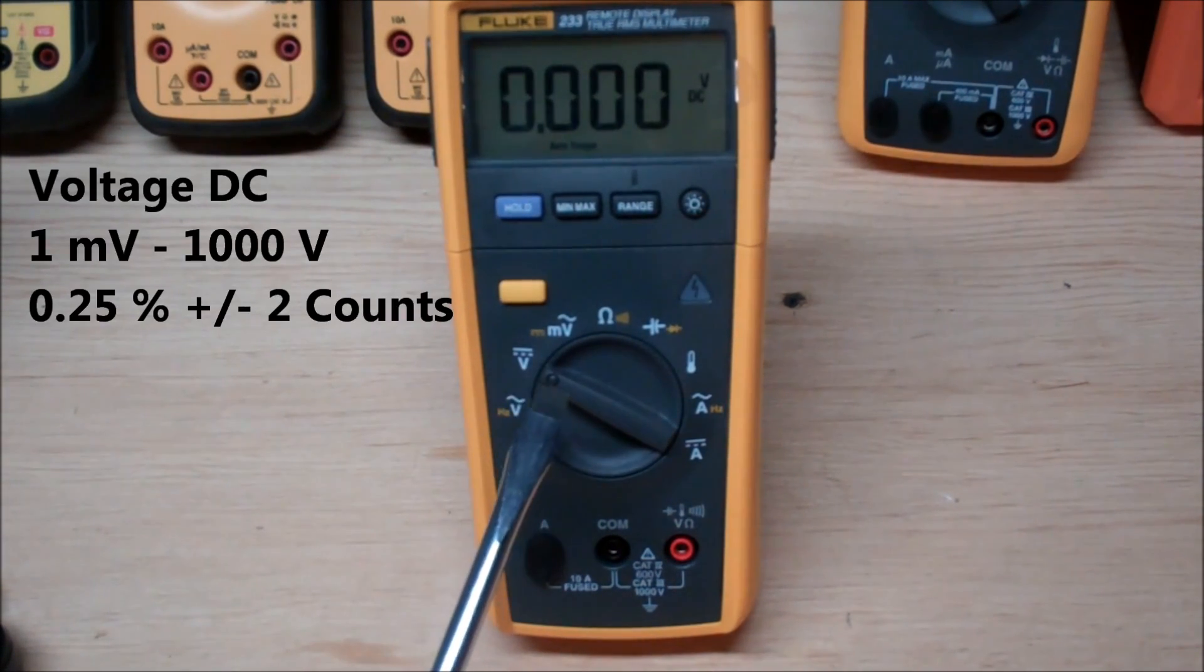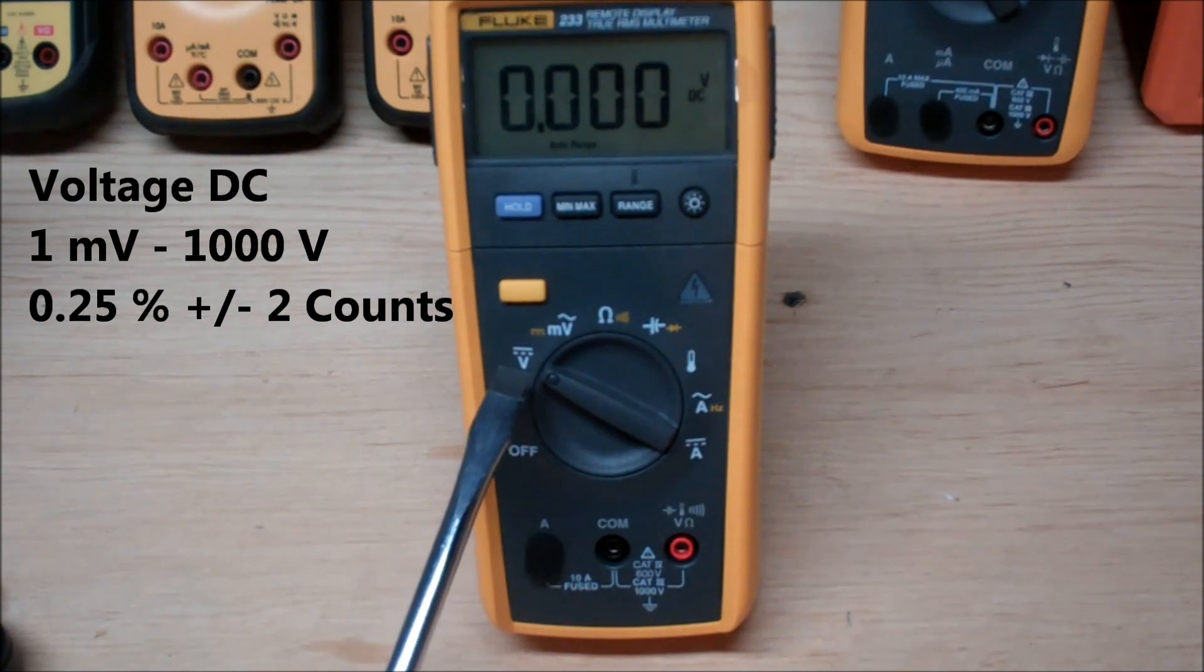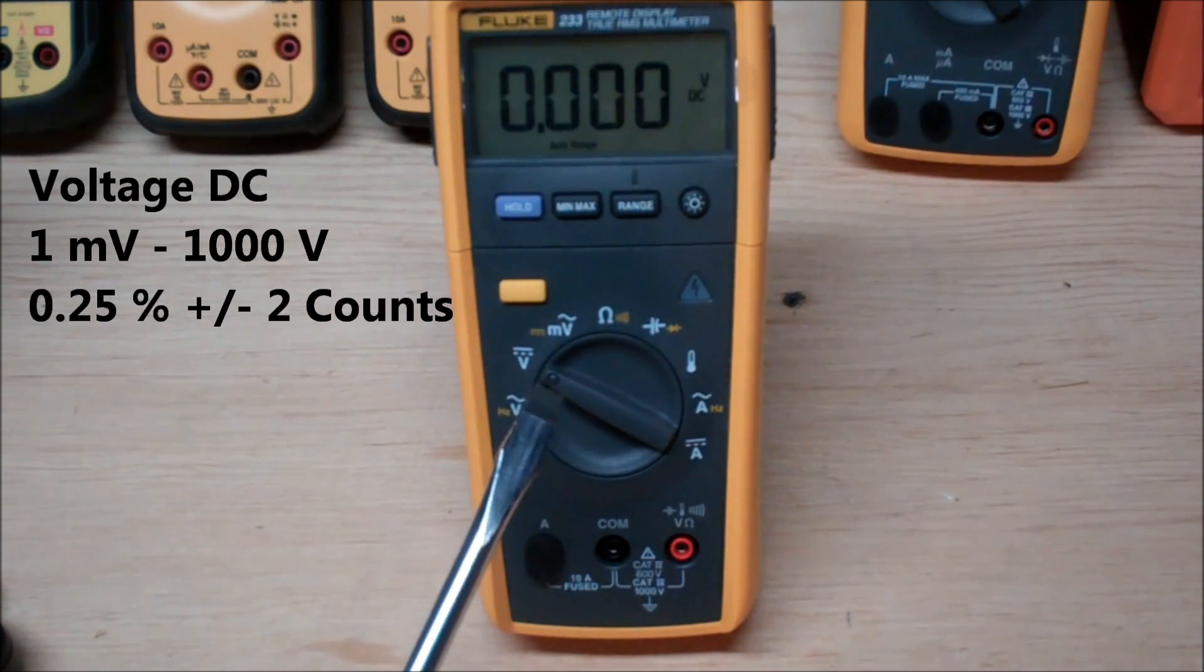Now the DC measurement capabilities of this is a lot more accurate than the AC capabilities as every meter is. It has an accuracy of 0.25 percent plus or minus two counts. And this also has the exact same range of measurements from 0.01 millivolts to 1000 volts DC.